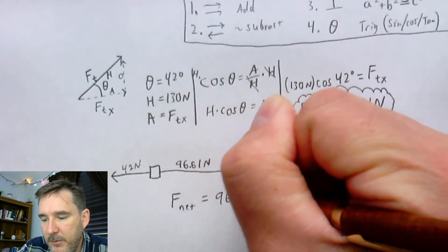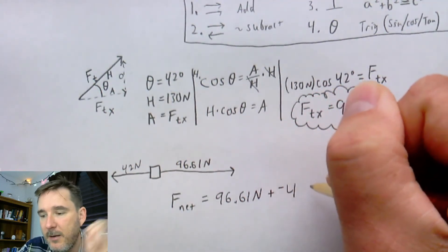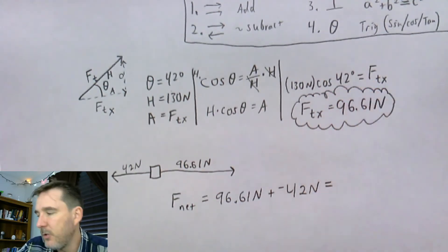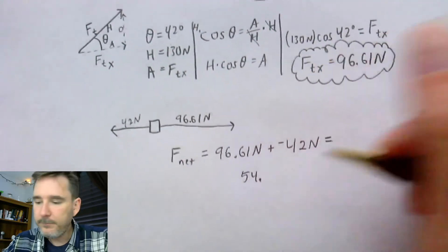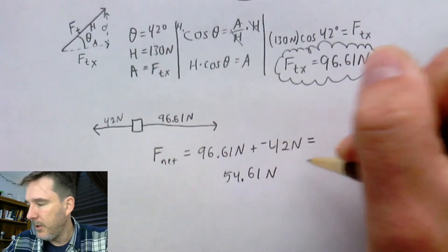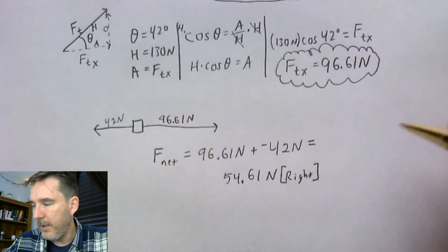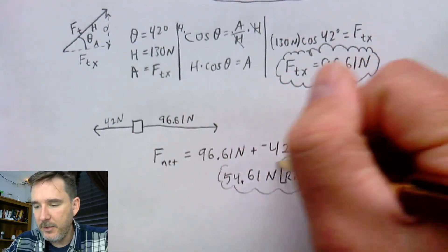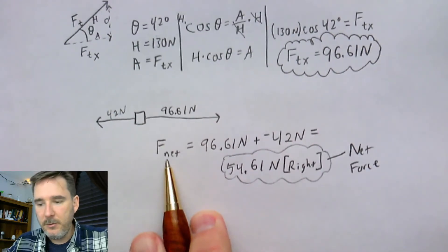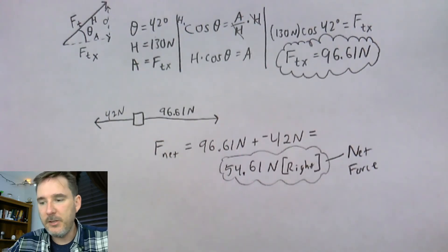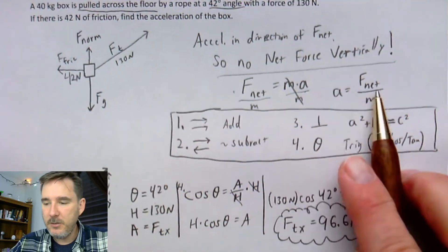F-net is the sum of the horizontal forces: 96.61 newtons to the right plus negative 42 newtons of friction — since left is negative by convention. That gives me 54.61 newtons to the right. I'll put a cloud around that too because this is literally my net force, and since there's no net force vertically, acceleration will be in the direction of the net force.